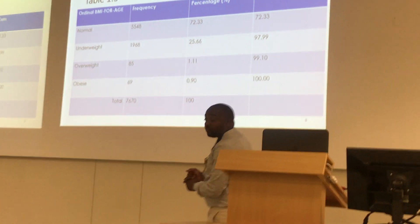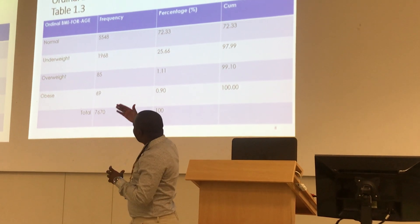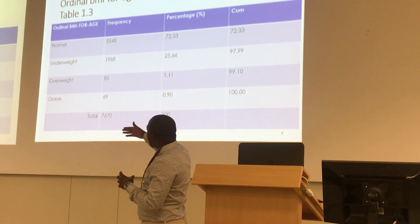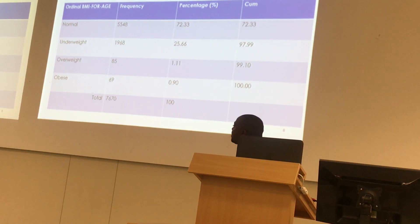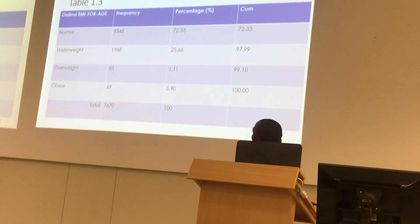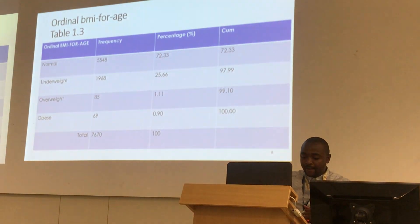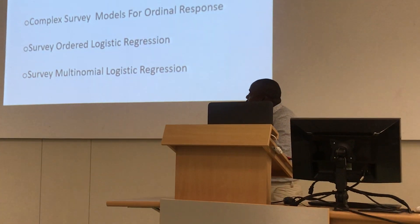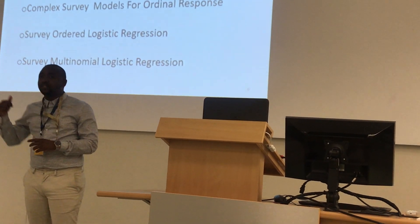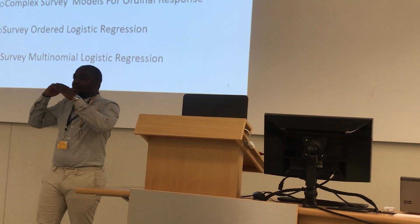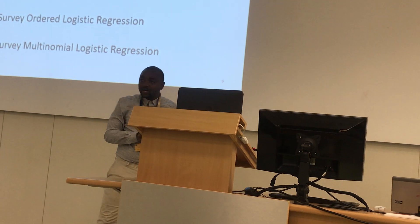From the children under five in Ethiopia, for normal, underweight, overweight, and obese categories, the frequency of children classified as normal was 5,548, and so forth as displayed. The method I used to make the BMI cutoff for children is the Z-score method.